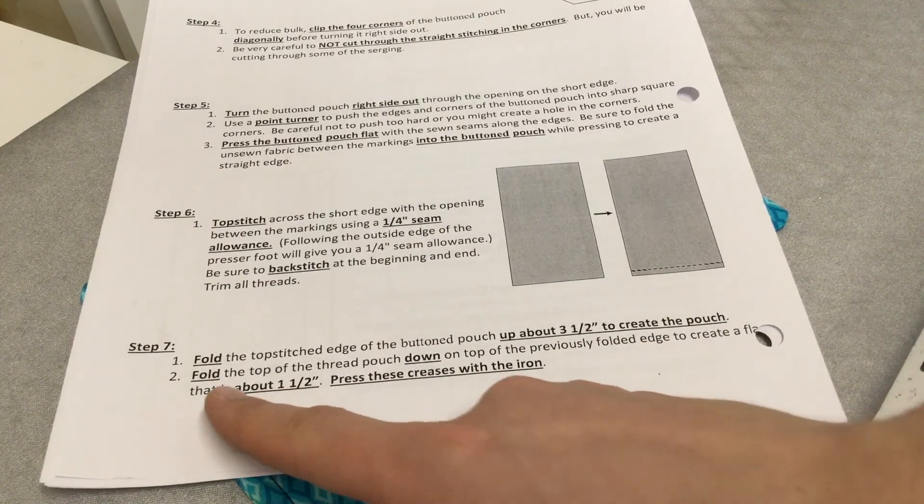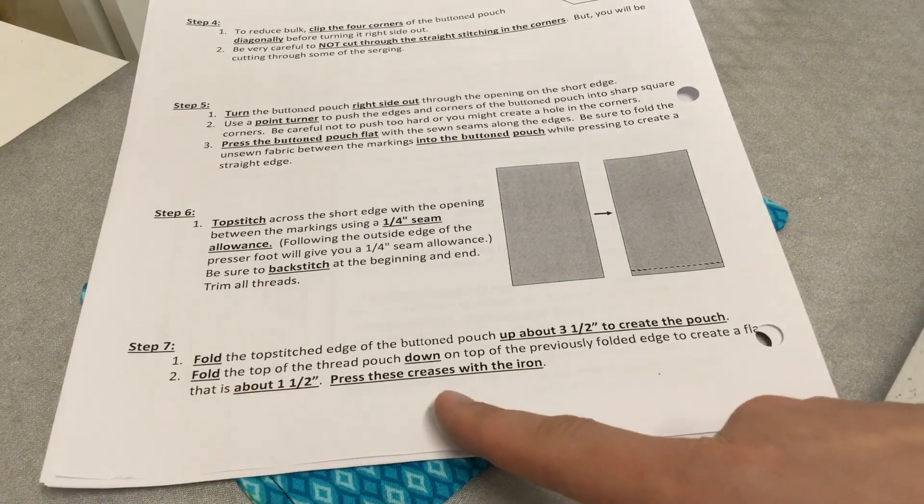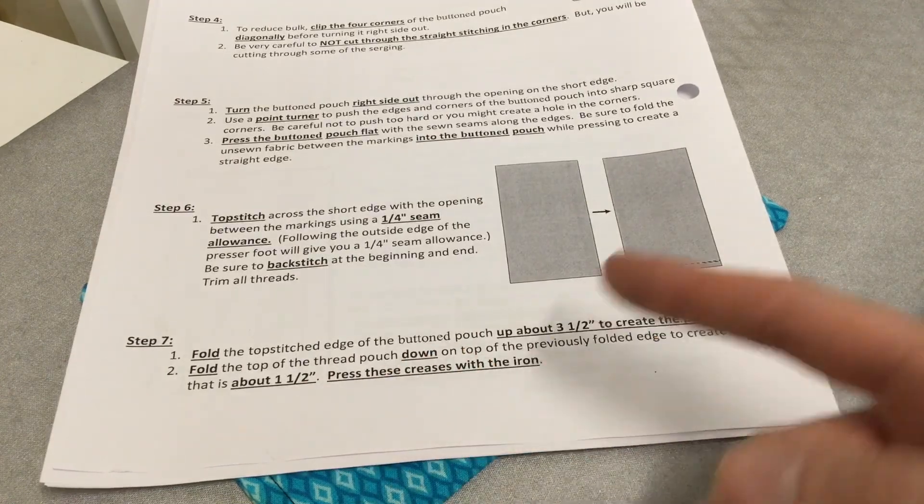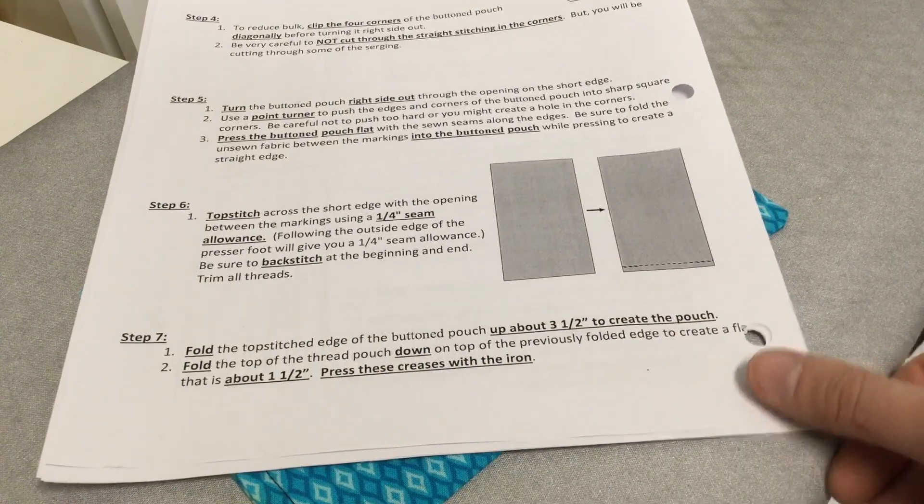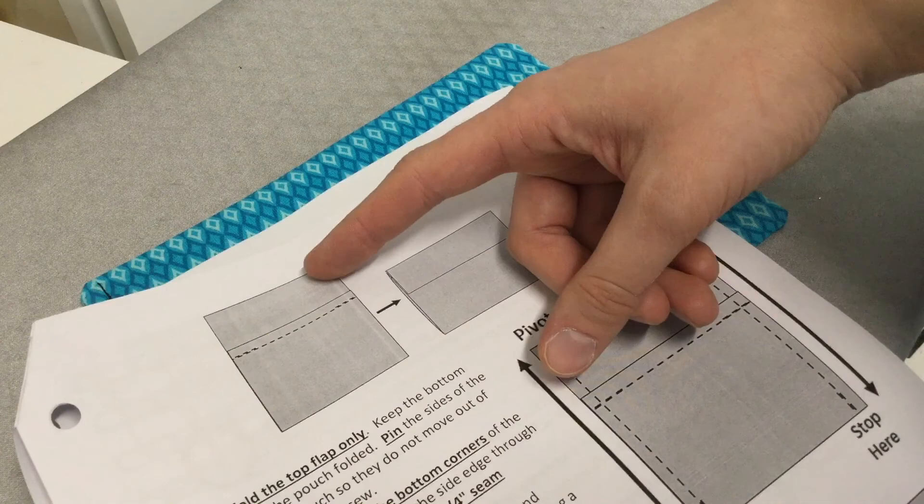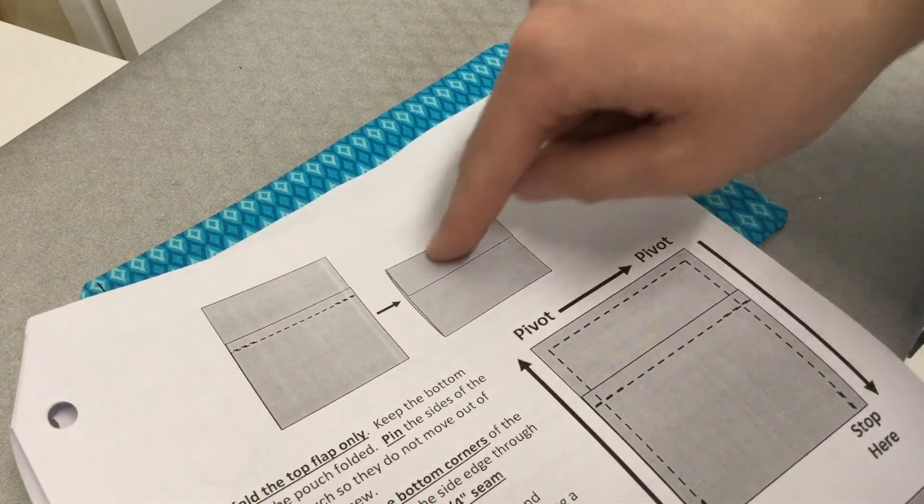Then we'll fold the other end down about a 1/2 inch so that it crosses and makes a pocket. We're going to iron this good, and then we'll add some pins and sew it. This is going to look kind of like this: one edge up, the other edge down, making an envelope shape.